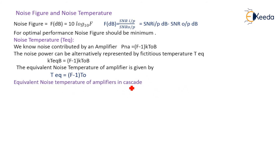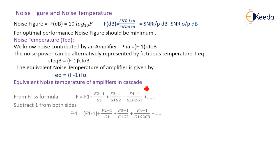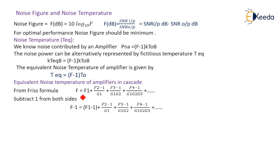For the equivalent noise temperature of amplifiers in cascade, we use the Friis formula: F = F1 + (F2 − 1)/G1 + (F3 − 1)/(G1 × G2) + (F4 − 1)/(G1 × G2 × G3) + and so on.